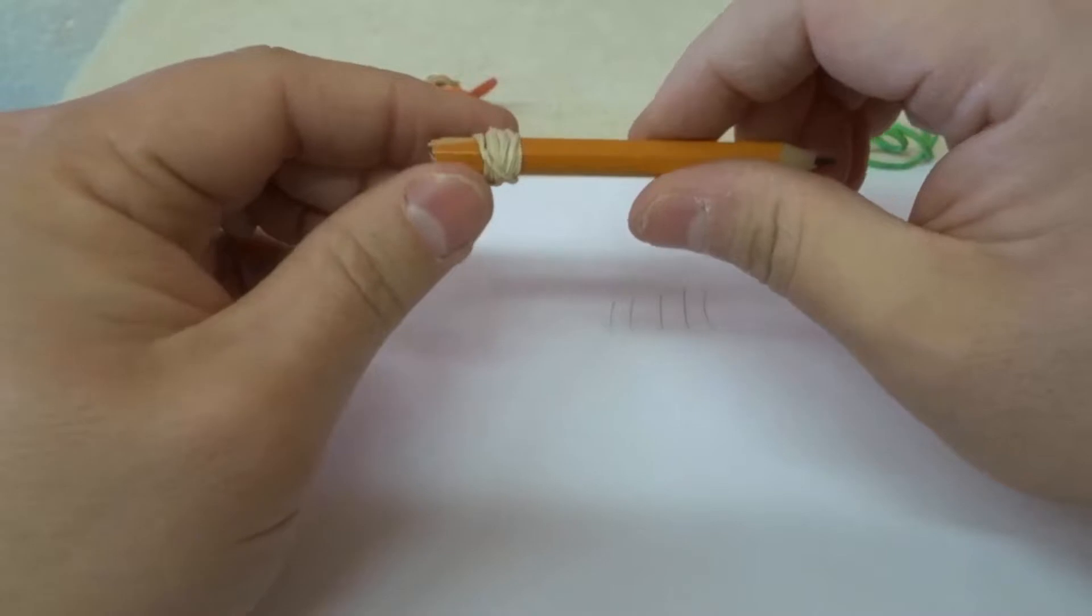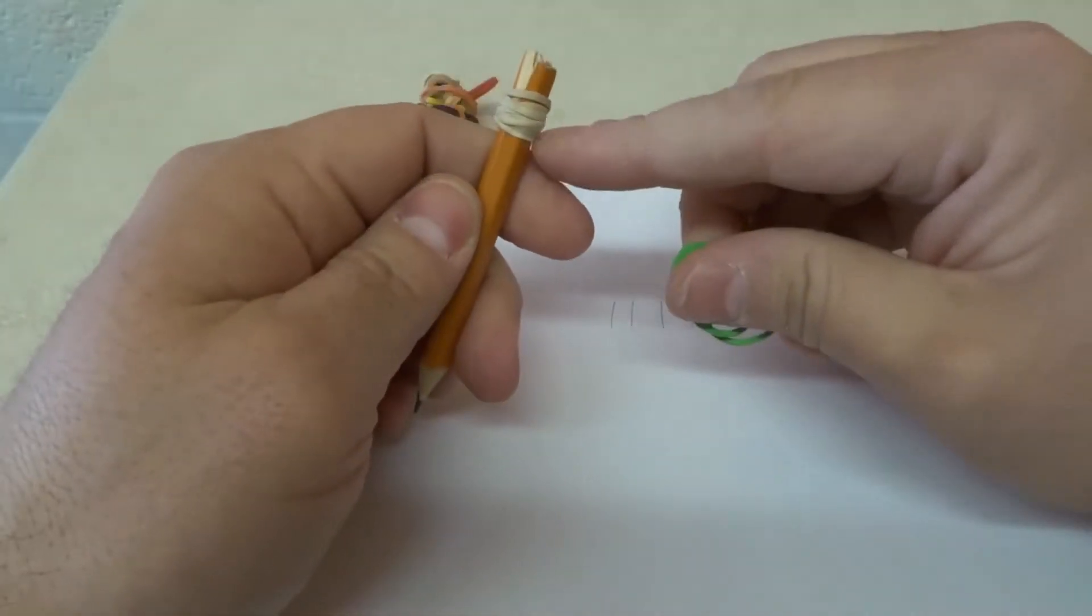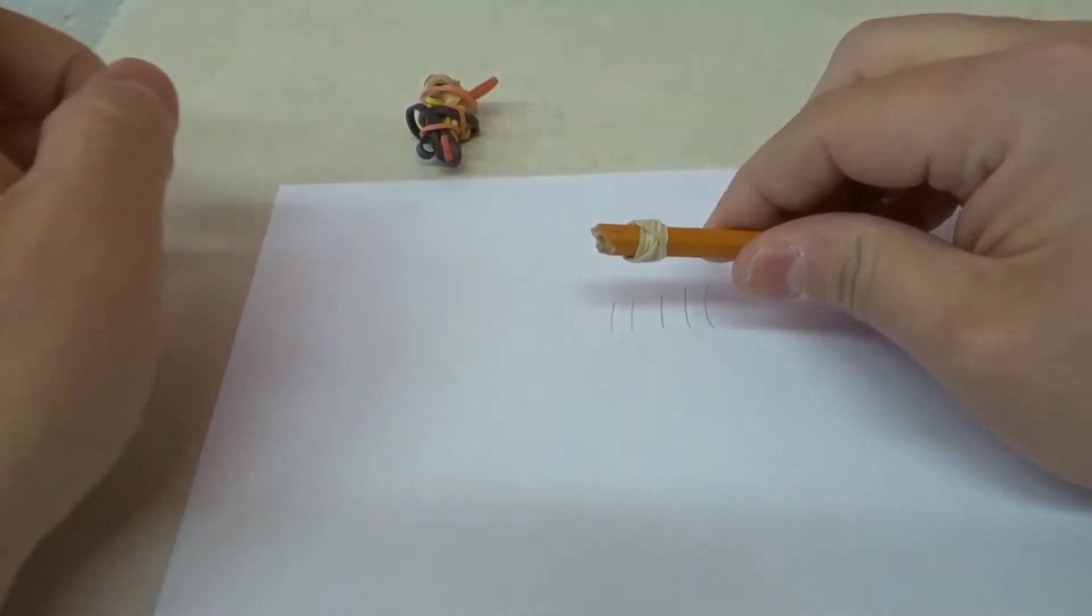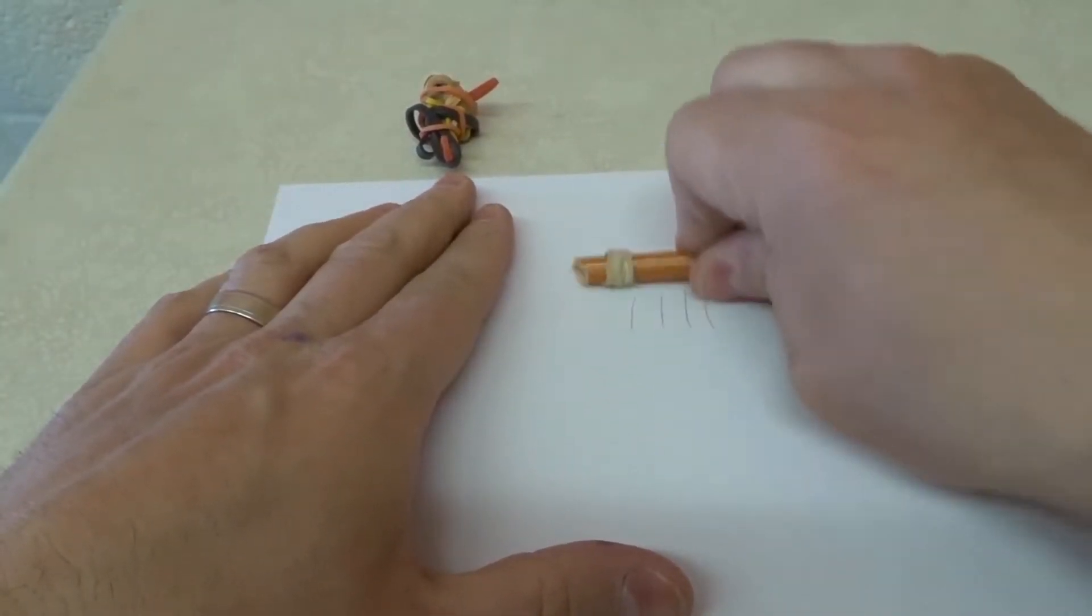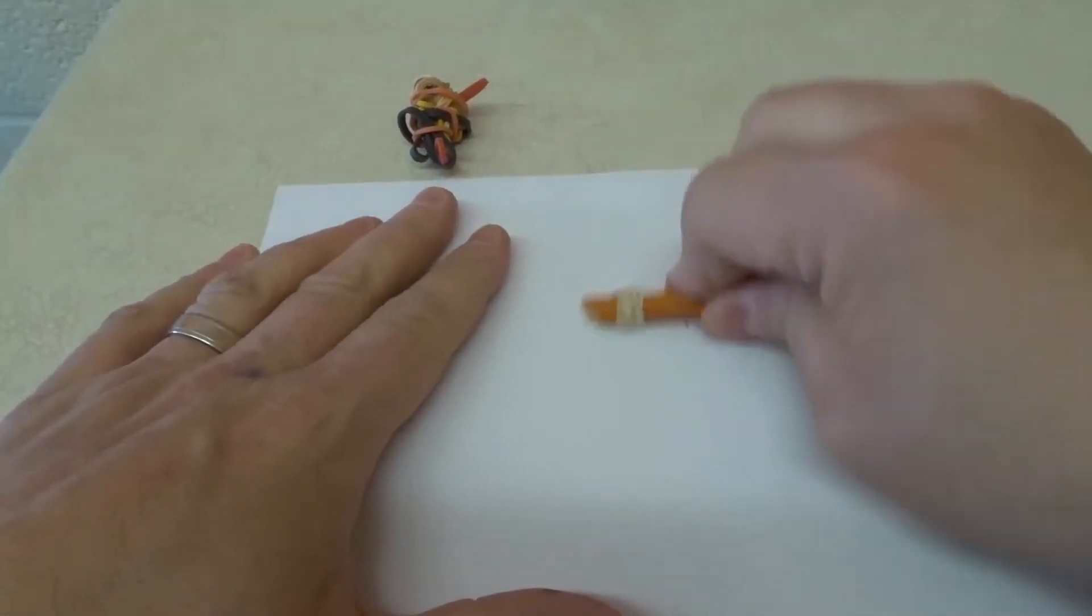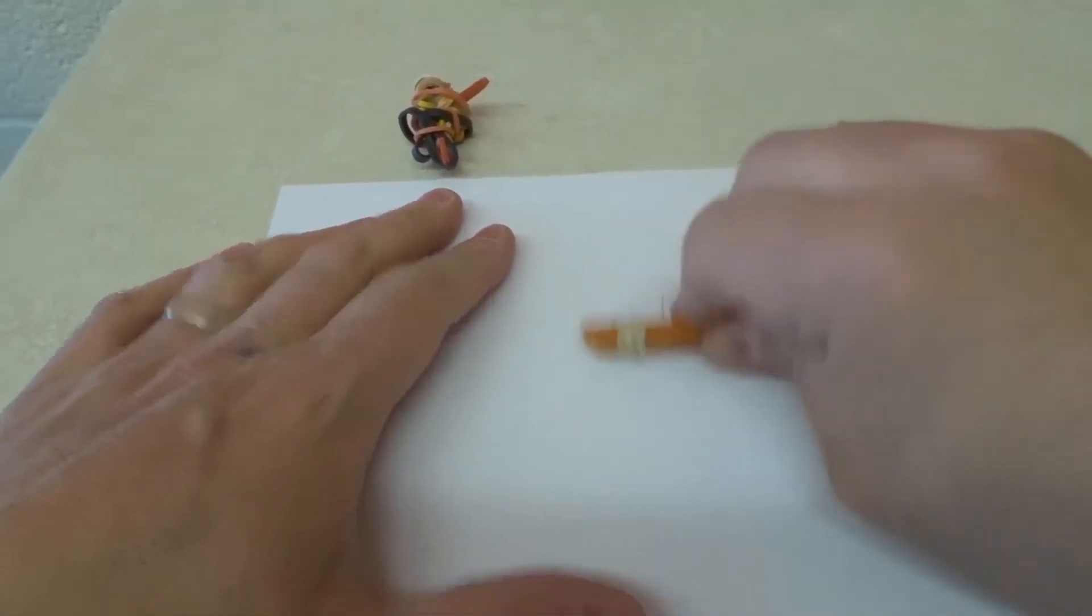Or you can do what I did right here, which is just wrap the rubber band around the pencil. And then you take the back of the pencil with the rubber band wrapped around it and you just rub that rubber band against what you want to erase. Check that out. Look at that. It's absolutely incredible.